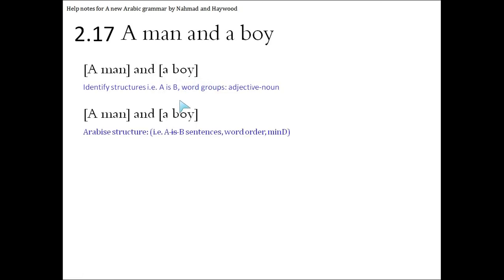Now, Arabize the structure, there's nothing really further to Arabize, a man already has an indefinite article, and boy already has an indefinite article, and and remains the same. So this is quite an easy one, a man is rajulun, and is wa, and a boy is waladun, so we get rajulun wa waladun, a man and a boy.